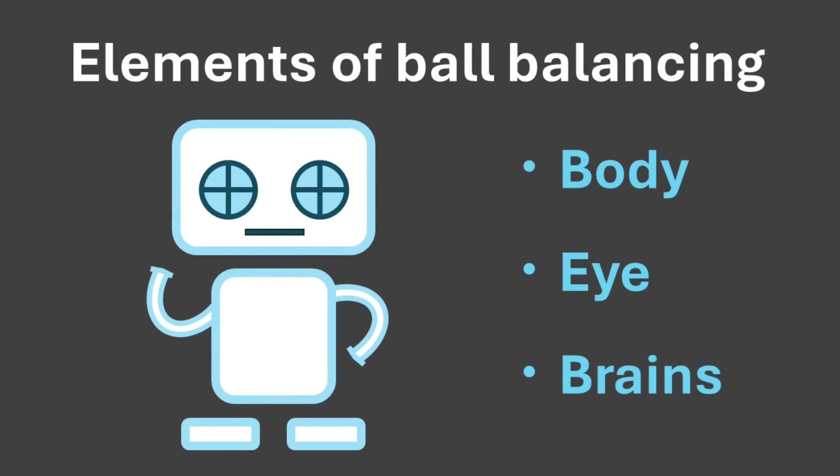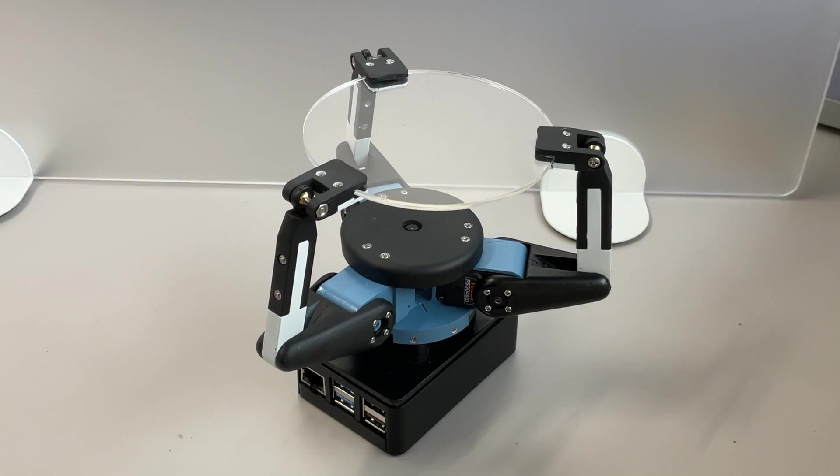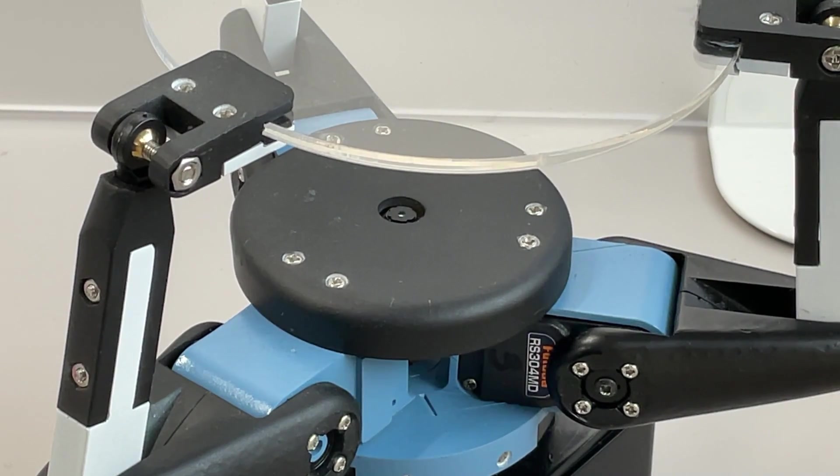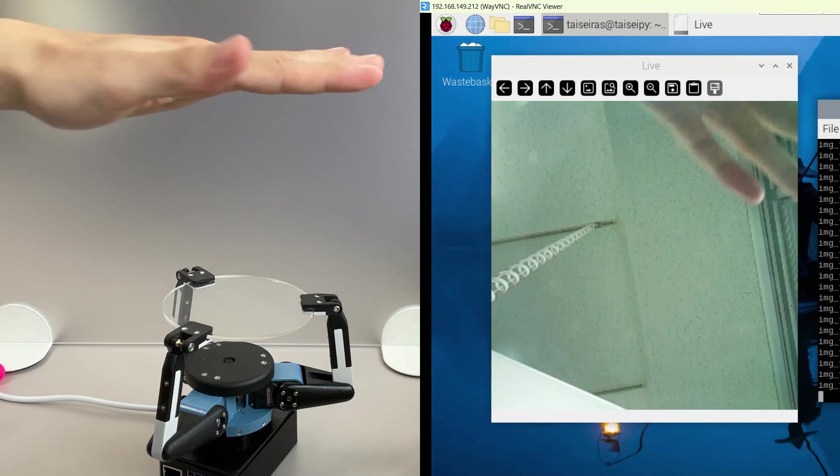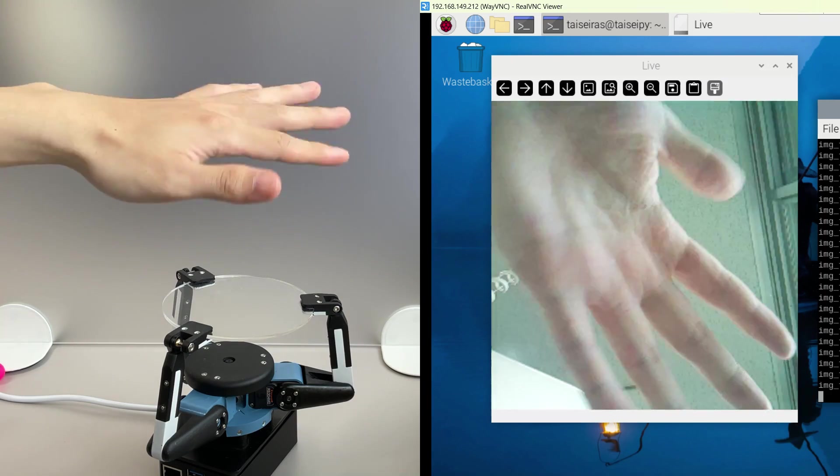Next, let's consider the second necessary element for ball balancing, the robot's eyes. In order to keep the ball on the platform, the robot needs to know where the ball is on the platform. Various sensors can be used to achieve this, but in this project, we will use a camera. The camera mounted on the robot produces the following image at approximately 60 fps.